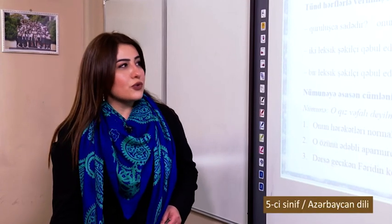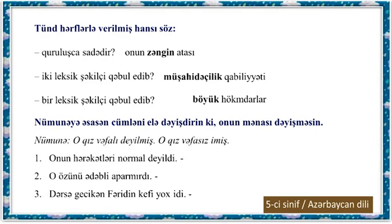Which of the words given with their definitions is simple in structure? Two have accepted lexical suffixes, one has accepted one lexical suffix. Three words are presented in the text: 'zəngin' (rich), 'müşahidəçilik' (observational ability), and 'böyük' (great). Analyzing their structure, we see that 'zəngin' is simple in structure because it cannot be divided into root and suffix. 'Müşahidəçilik' has two lexical suffixes: root is 'müşahidə,' 'müşahidəçi' is one lexical suffix, 'müşahidəçilik' is the second. 'Böyük' has one lexical suffix — the root is 'böy' and '-ük' is the lexical suffix, forming an adjective from a verb.